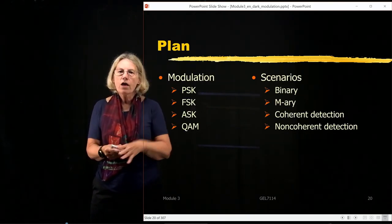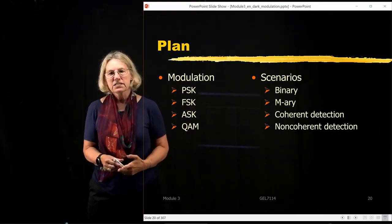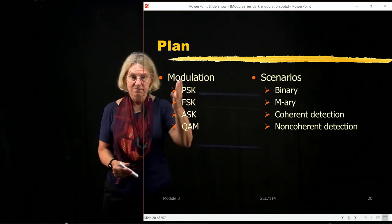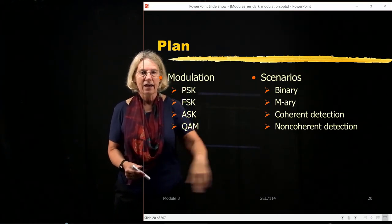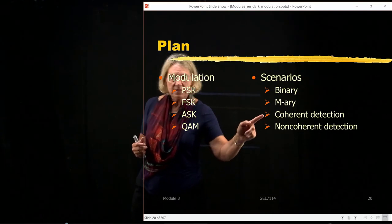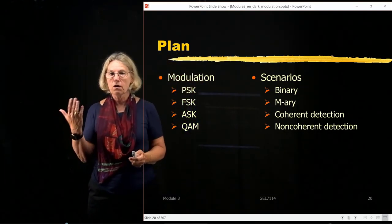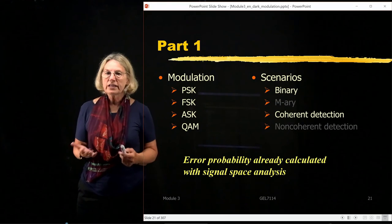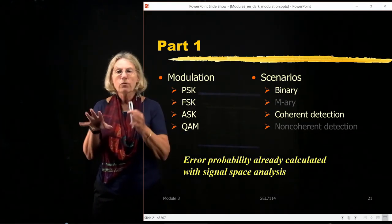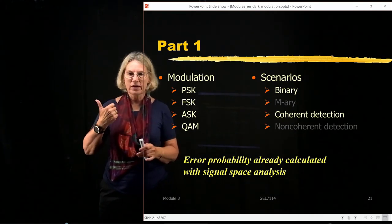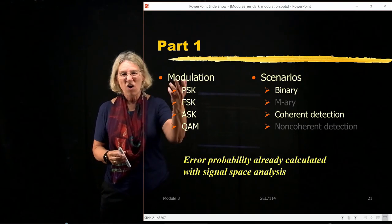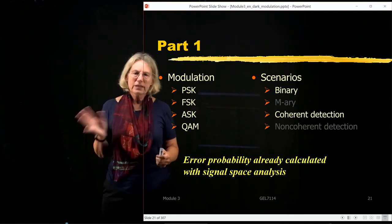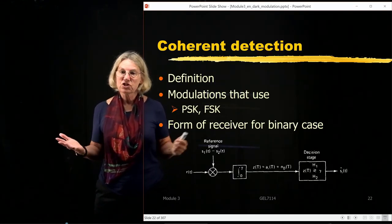Now having introduced all these different modulation formats, we need to attack different scenarios. We can look at the binary case — we've already seen binary PSK and ASK — but we want to extend to the M-ary case. We also have to examine coherent versus non-coherent detection. For the binary coherent case, having dealt with on-off keying and antipodal signaling, we've really already covered all four of them since a couple are equivalent.